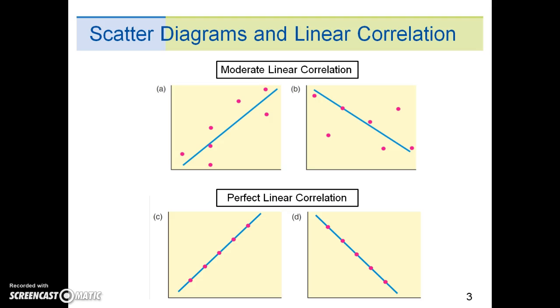If all the points do in fact lie on a line, then we have perfect linear correlation. In statistical applications, perfect linear correlation almost never occurs.